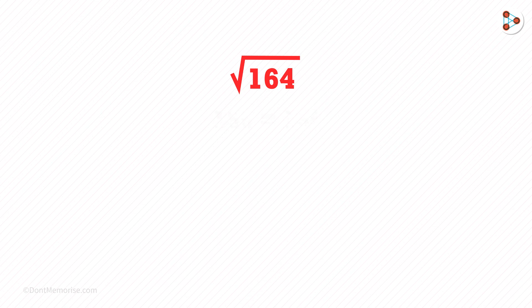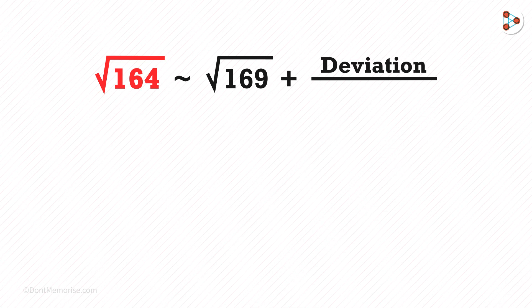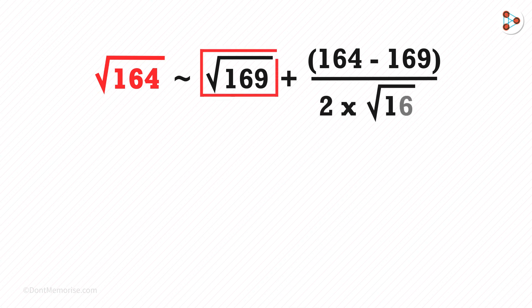So the value of this is approximately equal to the square root of 169 plus some fraction. In the numerator of the fraction, we write the deviation. The deviation is 164 minus 169. And in the denominator, we write 2 times the square root of the nearest perfect square, which is 169. The answer for this is 13.